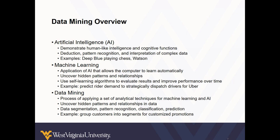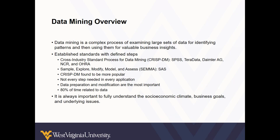AI is capable of some human-like functions like deduction and pattern recognition, and two mainstream examples are Deep Blue and the Jeopardy contestant Watson. Machine learning is an application of AI, and it enables computers to learn automatically to discover hidden patterns and relationships within data. Data mining is the process of applying a set of analytical techniques for machine learning and AI, so these concepts are tightly linked, and sometimes one term is used in place of another.